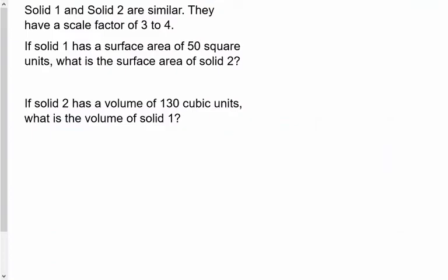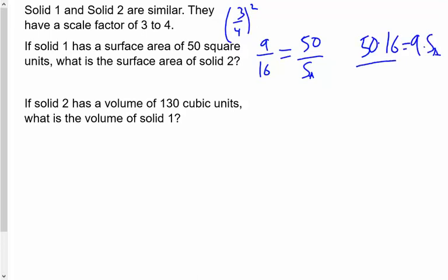Solid 1 and solid 2 are similar. They have a scale factor of 3 to 4. If solid 1 has a surface area of 50 square units, what is the surface area for solid 2? So what I'm going to do is take this 3 to 4 ratio and square it to get the ratio for their surface area: 9 to 16. And I'm going to set that up equal to 50 over surface area. Then I just cross multiply: 50 times 16 equals 9 times surface area, and then divide by 9, and then that would be your answer.